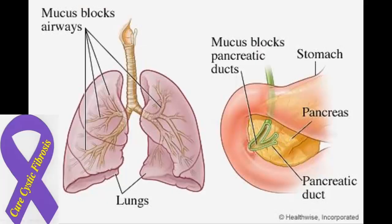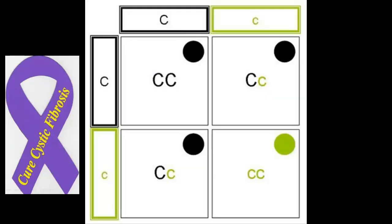Cystic fibrosis most commonly affects the respiratory system and the gastrointestinal system. One of the main issues is that it causes an over-secretion of fluids in the lungs and bronchioles, so people with this often suffer from bronchitis and pneumonia. Treatments include drainage of fluids from the lungs and breathing exercises. This disorder can be represented in a Punnett square because it is a recessive gene disorder.